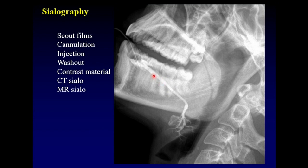This is an example of a normal sialogram. Notice that we have a uniformly tapering duct with very smooth walls. There is a regular branching pattern within the gland where each of the daughter ducts is smaller than its parent duct, and there is no displacement of the ducts within the gland itself.